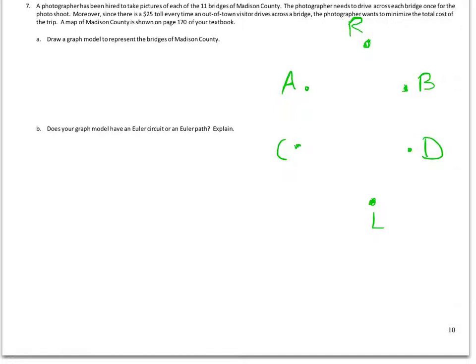Now I'm going to draw in my bridges. From the right bank, I have a bridge to A, two bridges to island B, so I'll put them in like that.